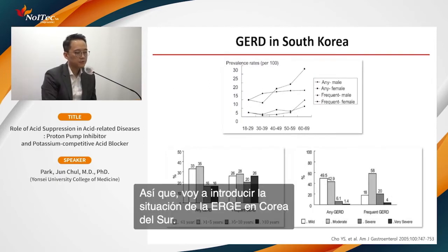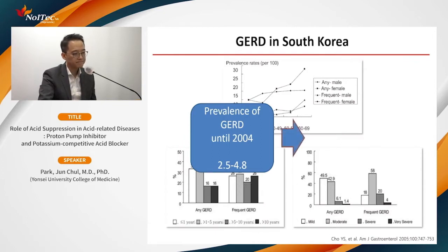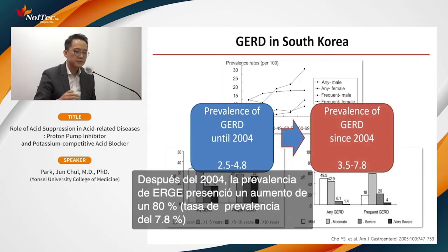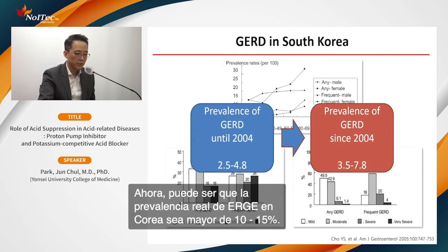Here is the South Korea situation. Until 2004, the prevalence of GERD was below 5%. After 2004, it roughly doubled. Nowadays, over 10% — perhaps around 15% — is the actual prevalence of GERD in Korea right now.